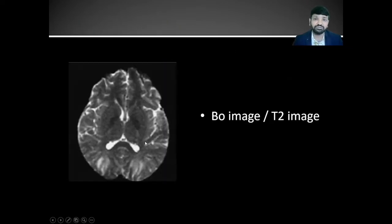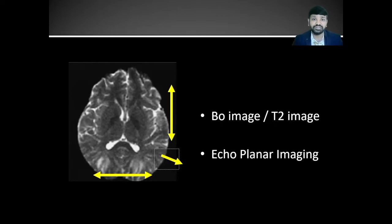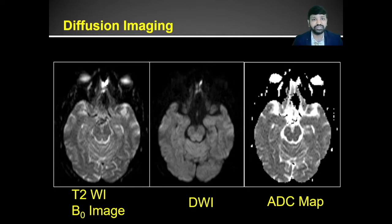How do we acquire the diffusion images? We will acquire a baseline image or B0 image without application of diffusion gradient. Then we will apply the diffusion gradient in all three planes at the same location and combine these images using echo-planar imaging. Finally, when you get a post-processed diffusion-weighted image, you will get three sets of images: one will be a B0 or T2-weighted image, you will get iso-diffusion weighted images, and an ADC map or apparent diffusion coefficient map.